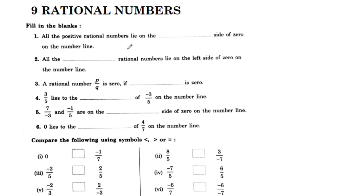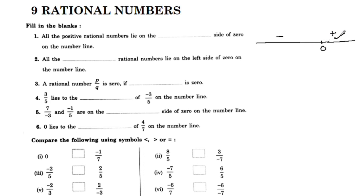All the positive rational numbers lie on the right side of 0 on the number line. Positive numbers are on the right side of 0; the left side has negative numbers. For rational numbers, it is similar - the right side of 0 on the number line contains positive rational numbers.